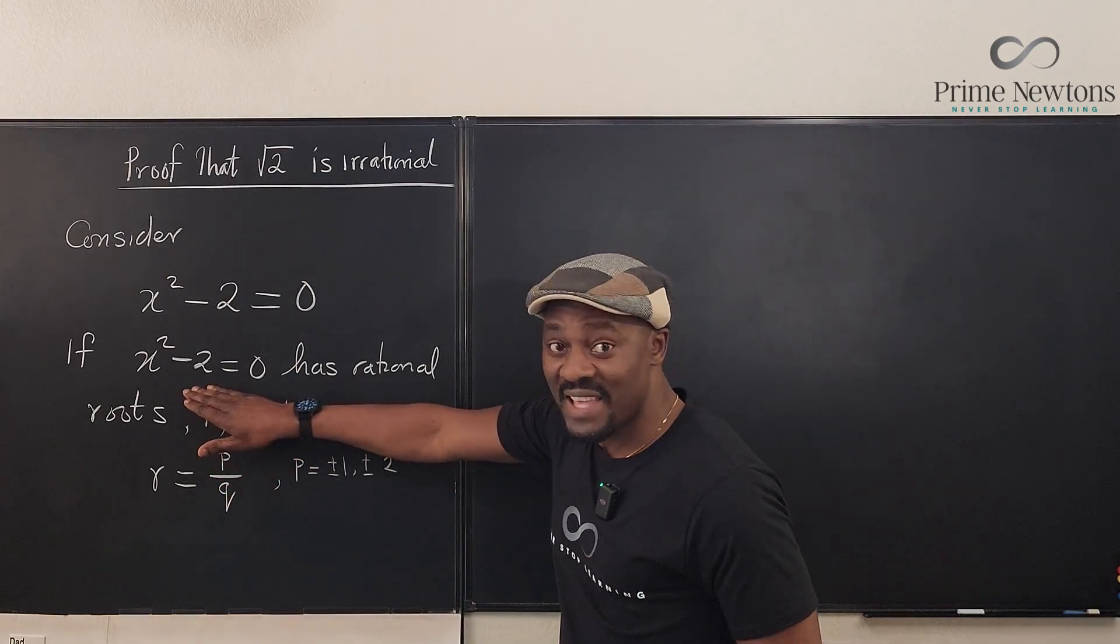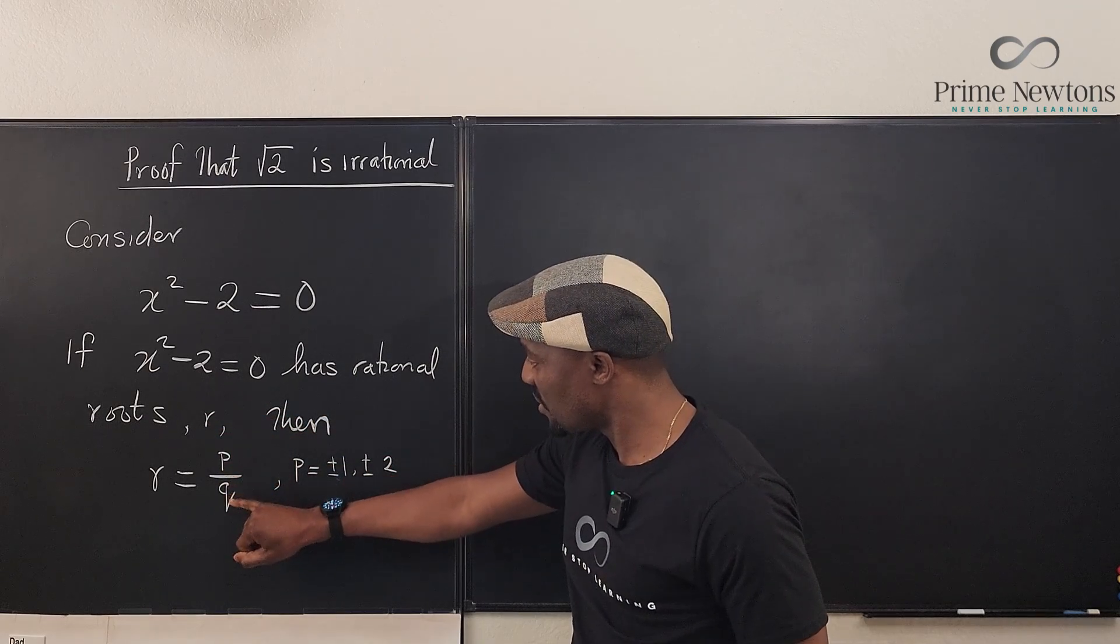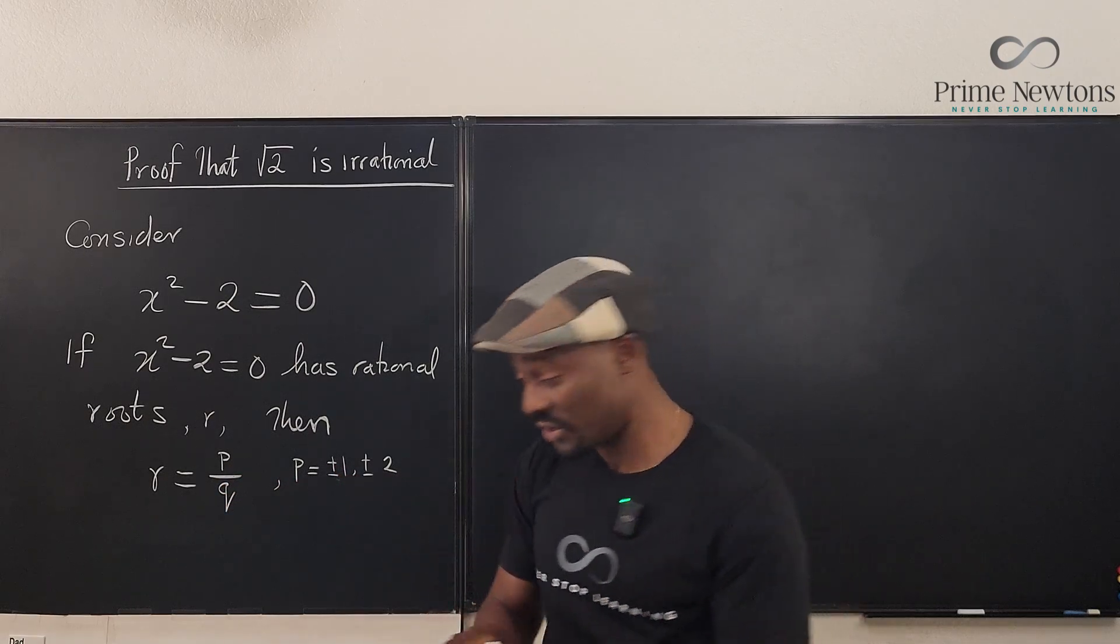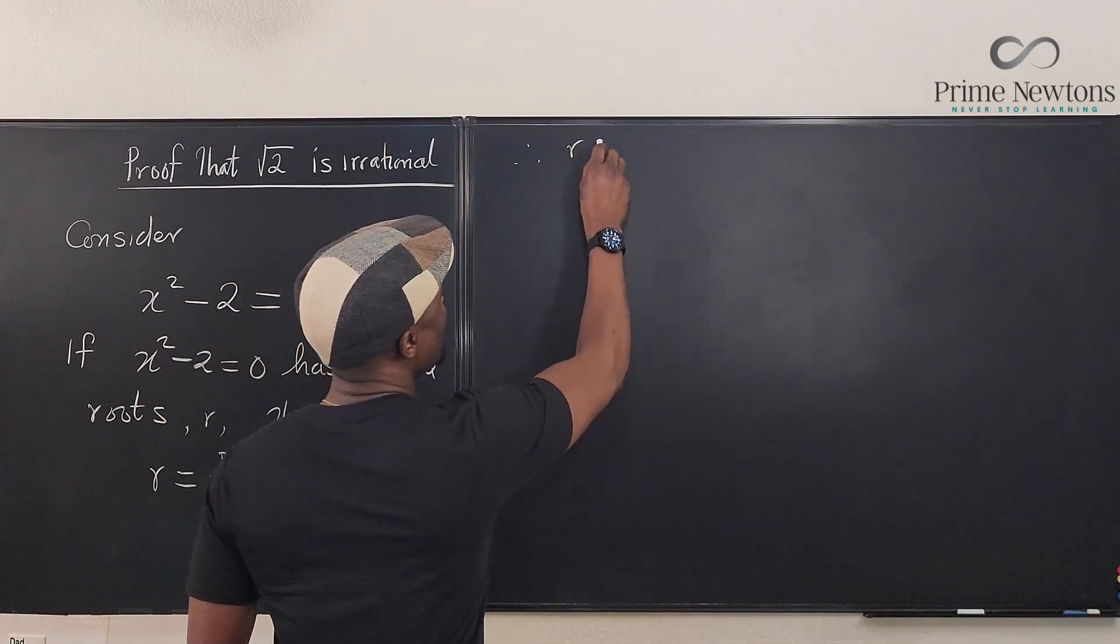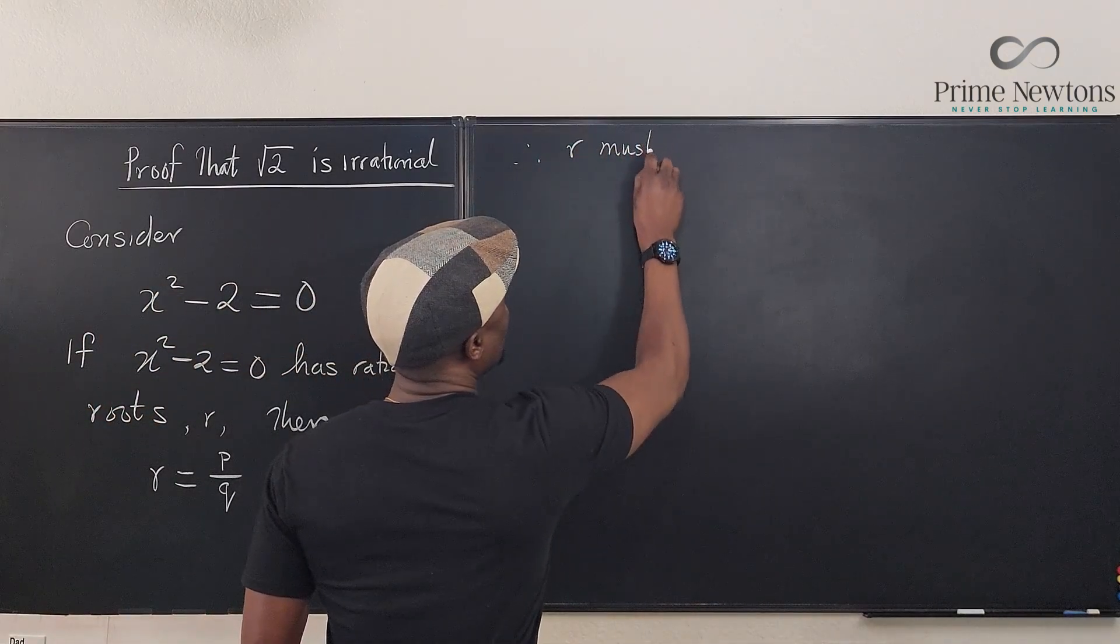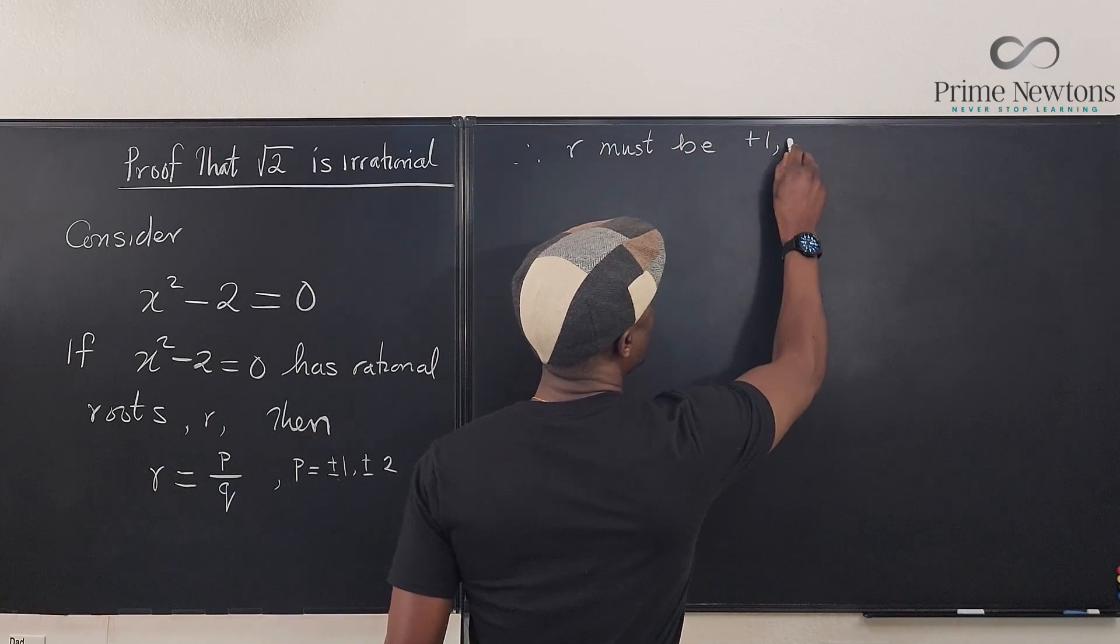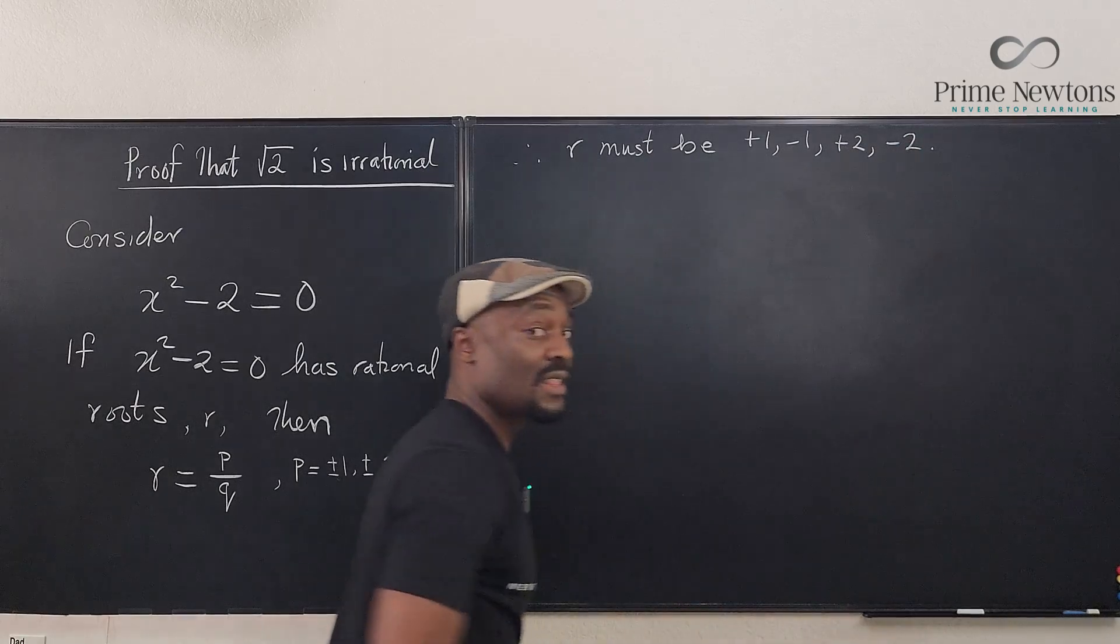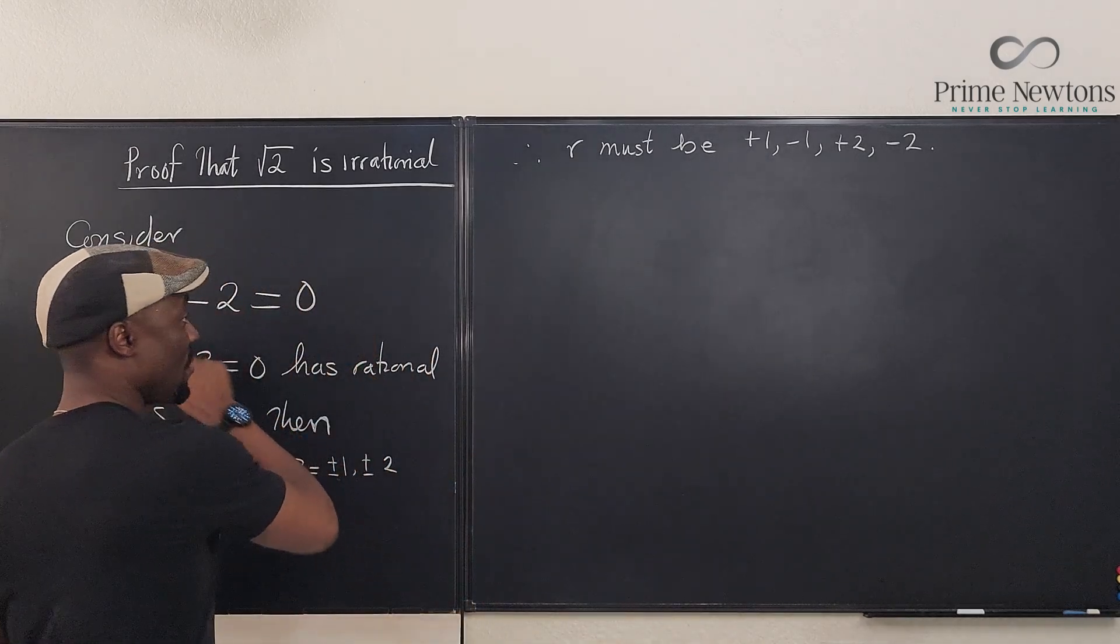So if this has rational solution, the solution has to be p over q. In this case, it is p over 1, so our p could be plus or minus 1. Therefore, r must be plus 1, minus 1, plus 2, or minus 2. Those are the possible solutions that are rational when you solve this equation.